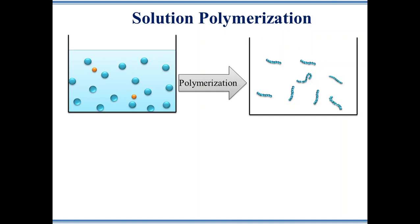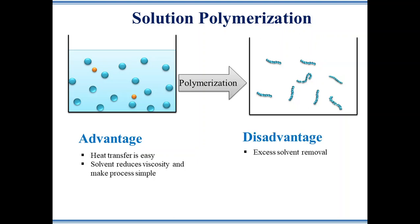The advantage of this method is heat transfer is easy due to presence of solvent. Solvent also helps in reducing viscosity which makes the process very simple. The disadvantage is the process of removal of excess solvent. Polymers such as polyacrylic acid and polyacrylonitrile are synthesized using solution polymerization.